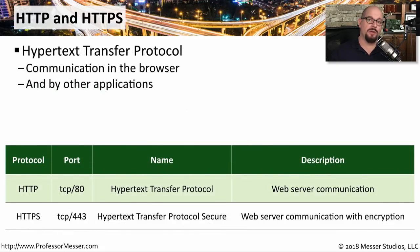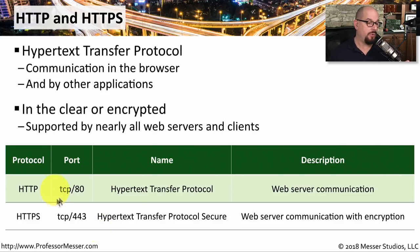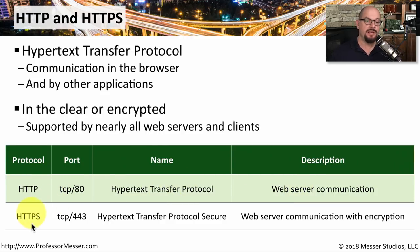Two of the most popular protocols you'll find on your network are HTTP and HTTPS — Hypertext Transfer Protocol and Hypertext Transfer Protocol Secure. These are two protocols commonly used by our browsers, though other applications may also use HTTP and HTTPS even if they don't run inside of a browser. Traffic sent through TCP port 80 is commonly using HTTP and is sending web server communication in the clear. If someone's using HTTPS, then they're communicating through TCP port 443, and all of that traffic will be encrypted.